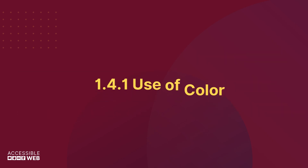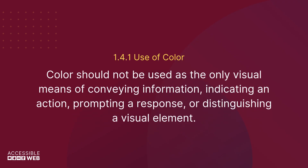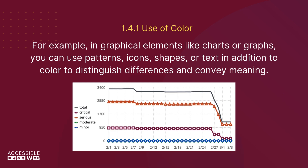WCAG 1.4.1 Use of Color: Color should not be used as the only visual means of conveying information, indicating an action, prompting a response, or distinguishing a visual element. For example, in graphical elements like charts or graphs, you can use patterns, icons, shapes, or text in addition to color to distinguish differences and convey meaning.